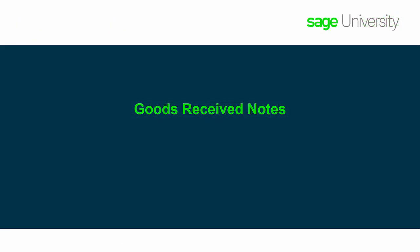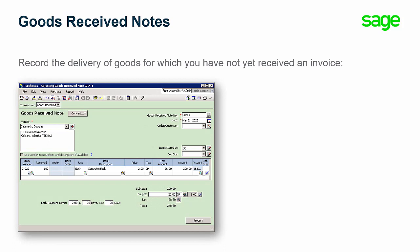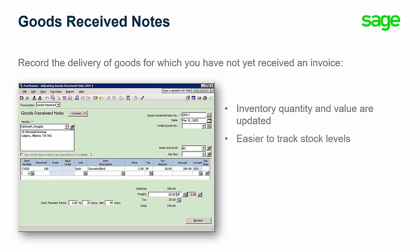Now, we'll describe goods received notes. Have you ever been in a situation where you receive goods from a supplier and the invoice is not provided until a later date? Goods received notes in 2019.2 can be used to record the delivery of goods for which you have not yet received an invoice. When a goods received note is recorded, your inventory quantity and value are updated, making it easier to track your stock levels and allowing you to use the received goods in other transactions.